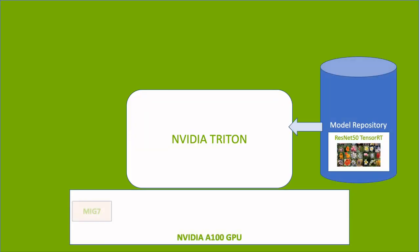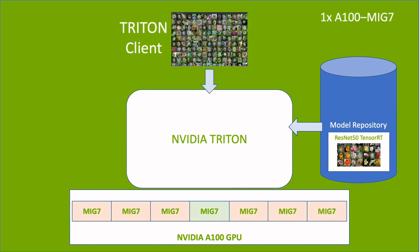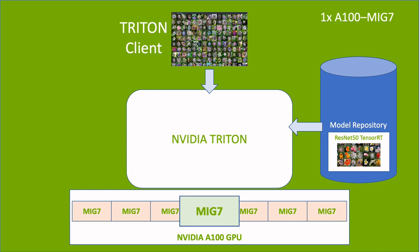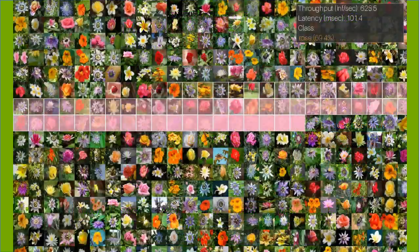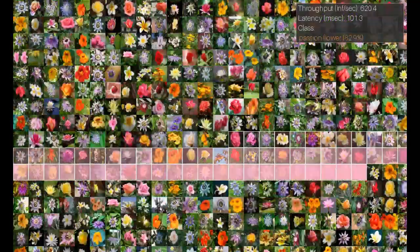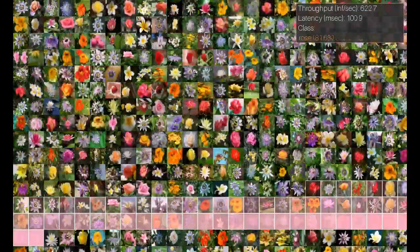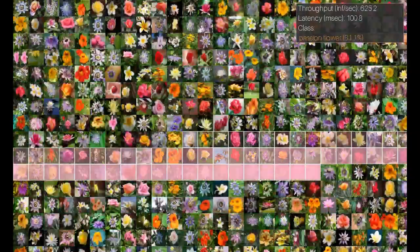NVIDIA A100 GPU can be partitioned into 7 MIG instances. Now, we have the model served by a Triton instance placed on one of the 7 MIG instances of an A100 GPU. We can see the inference throughput is around 620 inferences per second, and a T4 GPU has a higher throughput than one MIG slice.